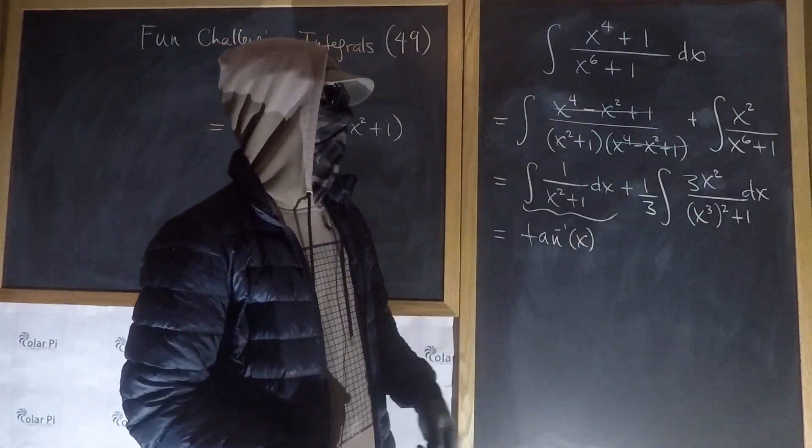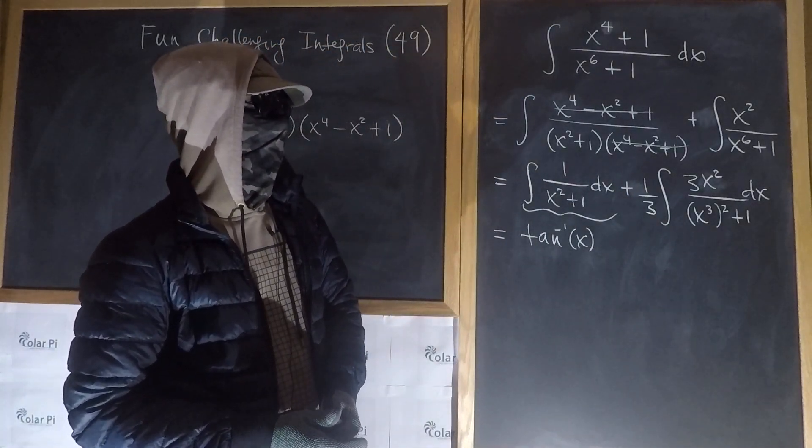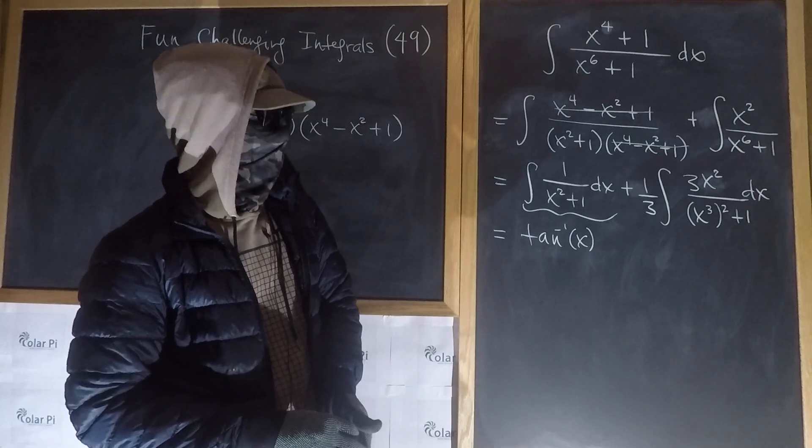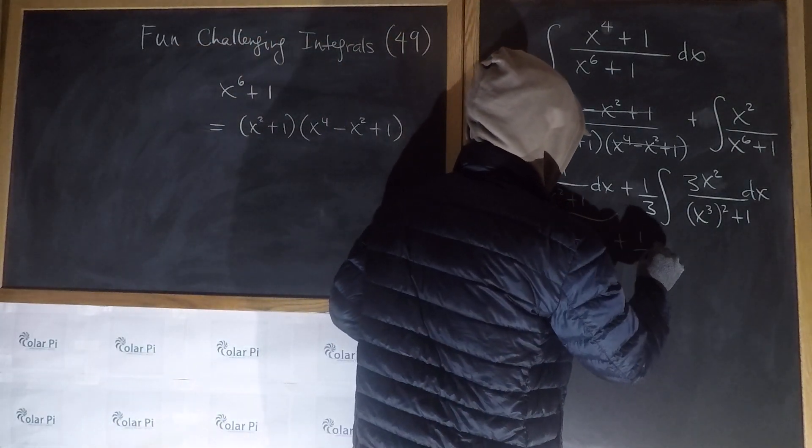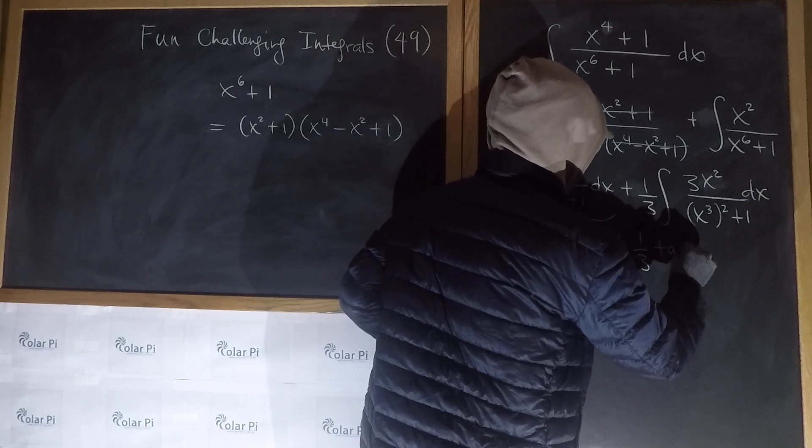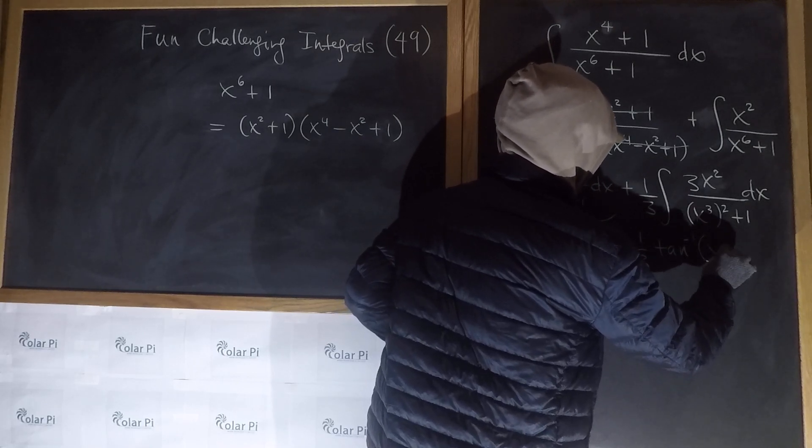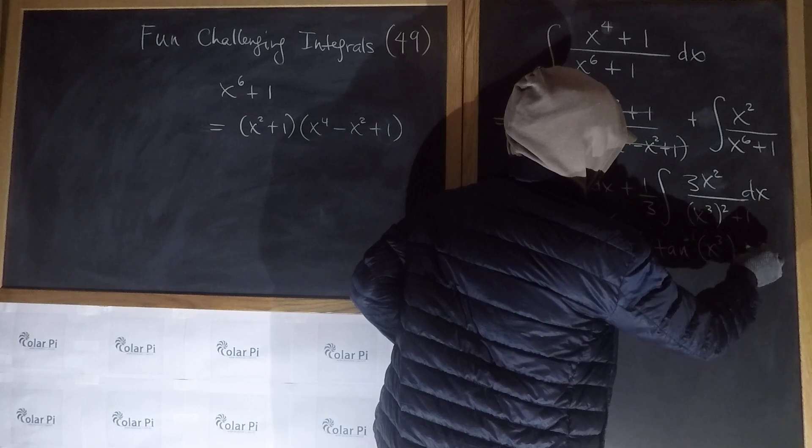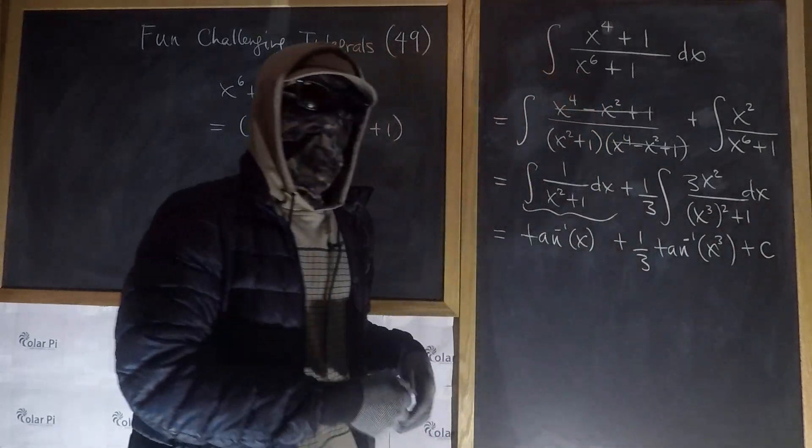And the second integral is a 3rd tan inverse of u where u again is x cubed. So it's plus a 3rd tan inverse of x cubed, and then of course plus c. Done.